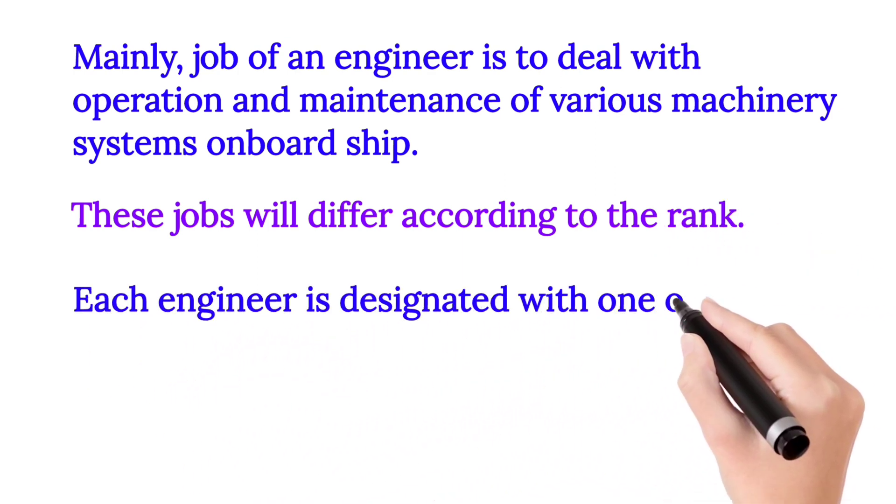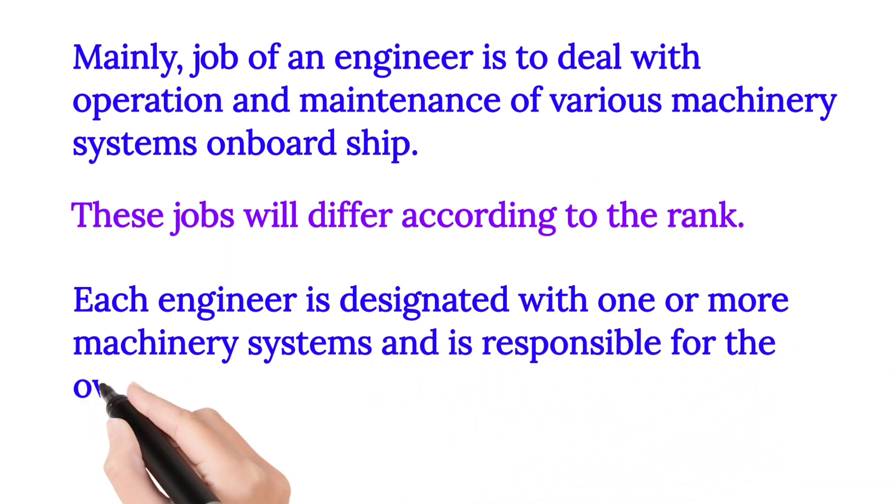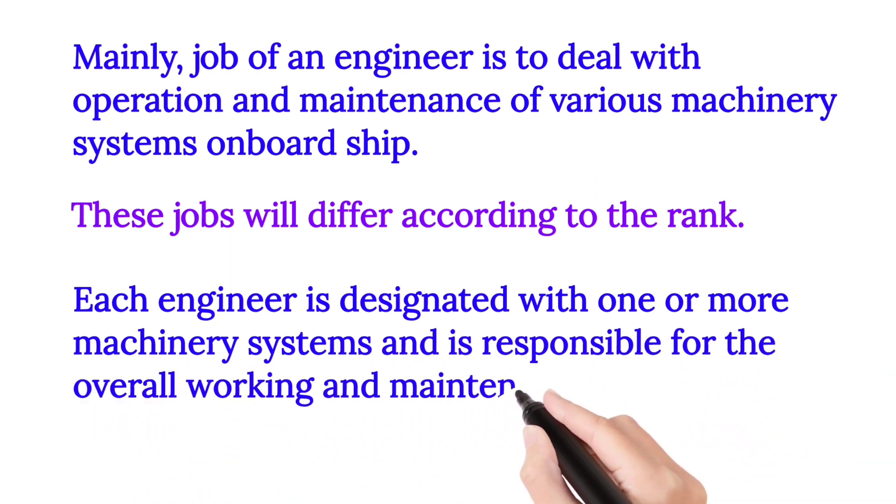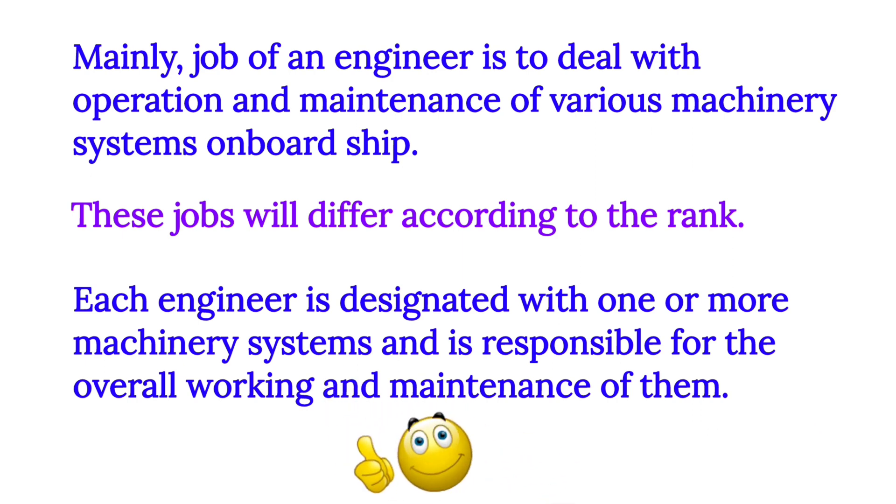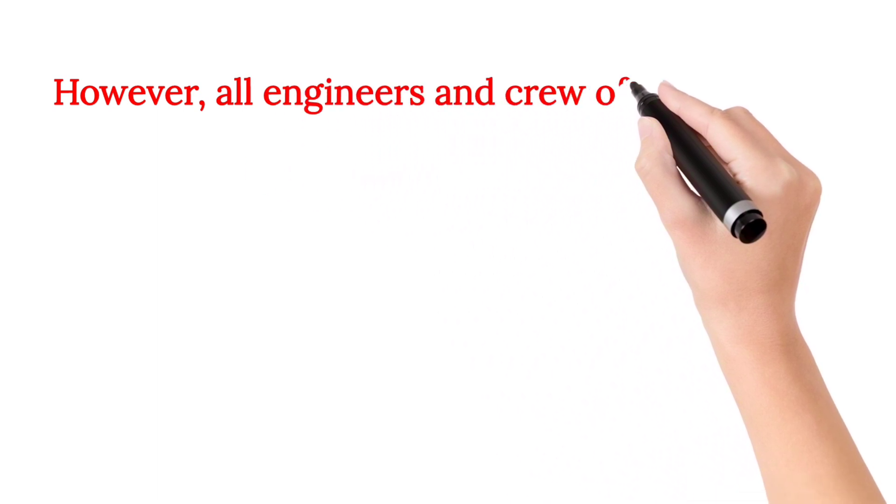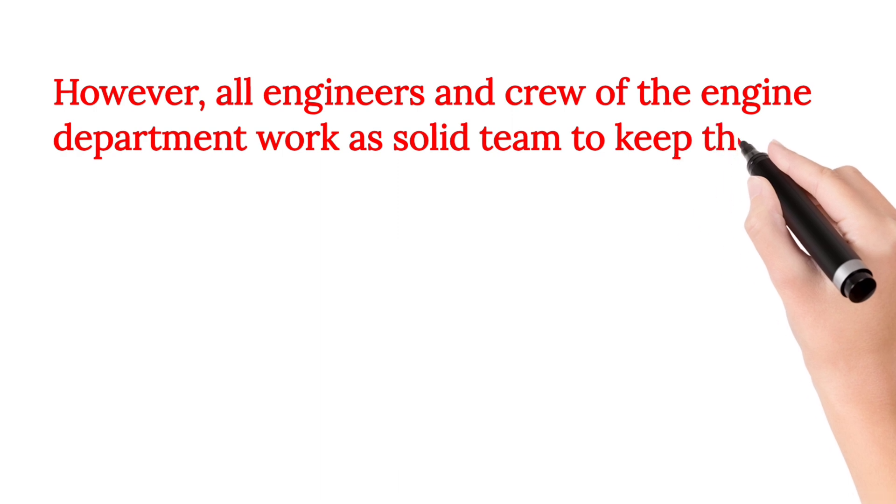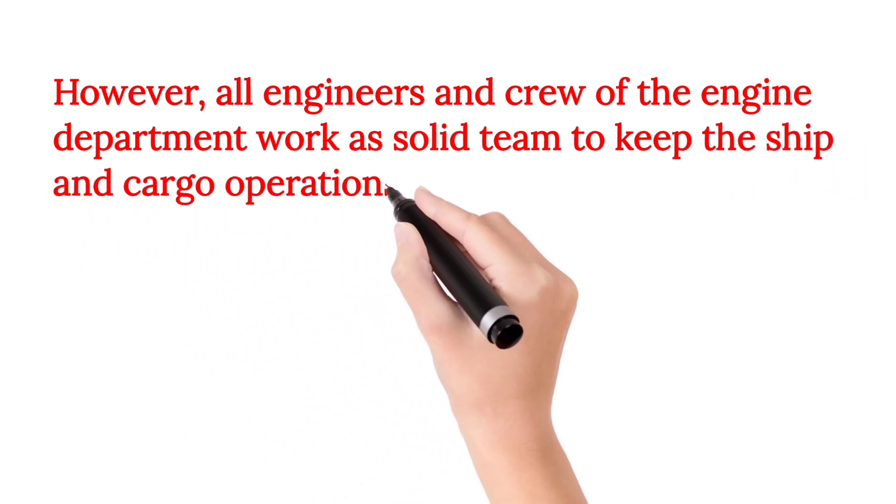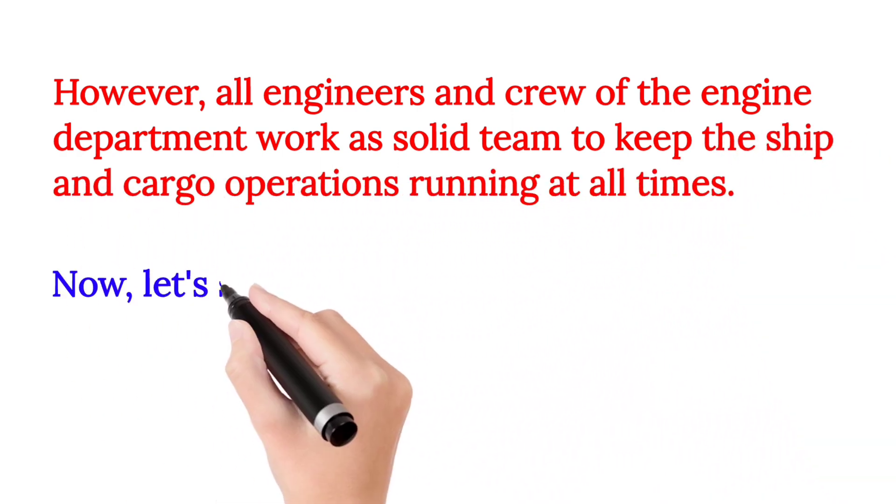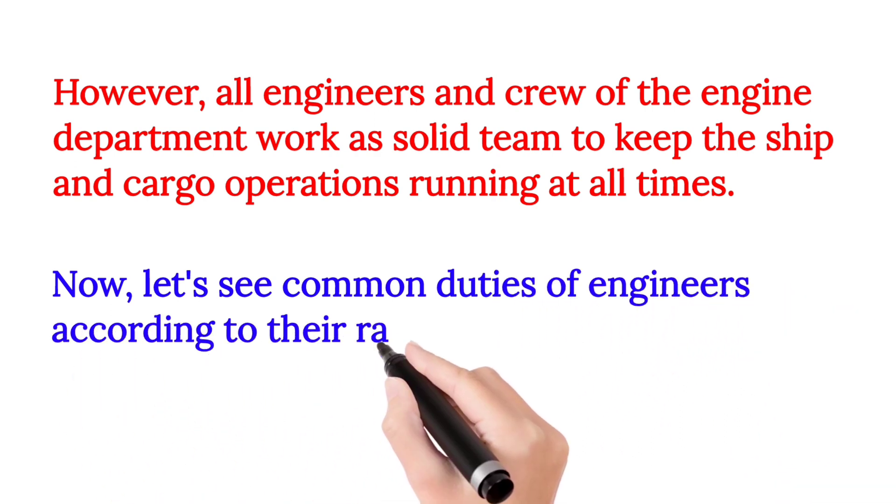Each engineer is designated with one or more machinery systems and is responsible for the overall working and maintenance of them. However, all engineers and crew of the engine department work as a solid team to keep the ship and cargo operations running at all times. Now let's see common duties of engineers according to their ranks.